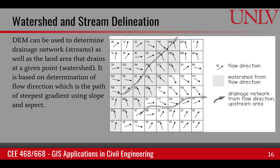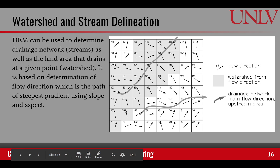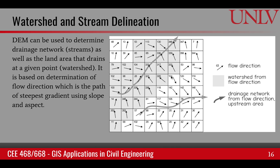And if I know the stream, I can figure out what area is contributing to a given stream or a given point on the stream, which is the definition of the watershed. So potentially, a DEM can be used to determine what is the drainage network of an area and what is the watershed for a given point of interest.